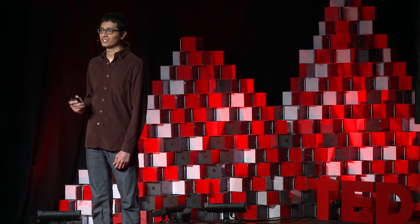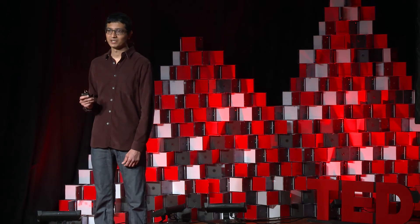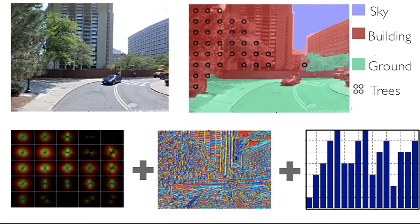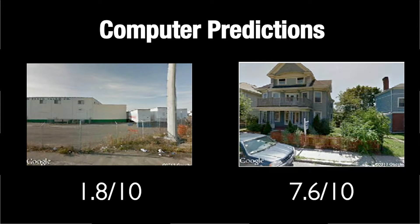We call this score street score. The higher the score, the safer the image looks to a majority of users. Now that we have these examples, we can train the computer to do this task. The computer learns from the shapes, textures, and colors present in the image and learns to assign a score to a new image it has never seen before. It assigns low scores to street blocks that have empty streets, run-down buildings, and industrial warehouses. On the other hand, it assigns a high score to suburban houses with manicured lawns and clean streets lined with trees.